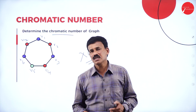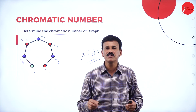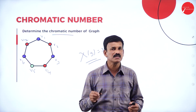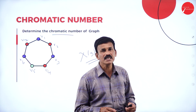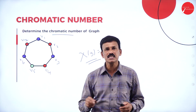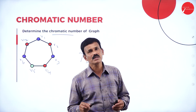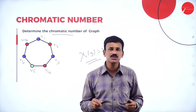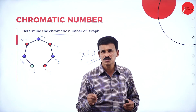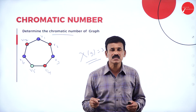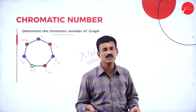In general, to color a graph: if any two vertices are connected, we represent them with different colors. If they are not connected, we represent them with the same color. The minimum number of colors used to paint the given graph is nothing but the chromatic number.